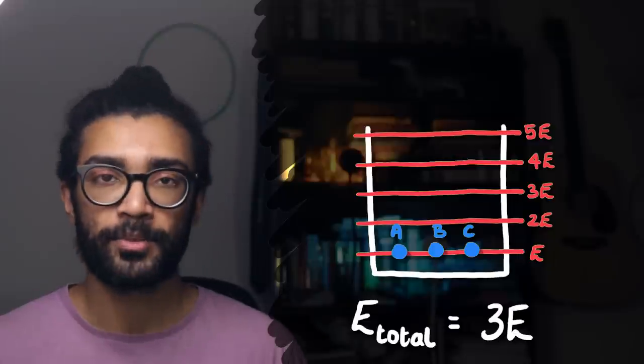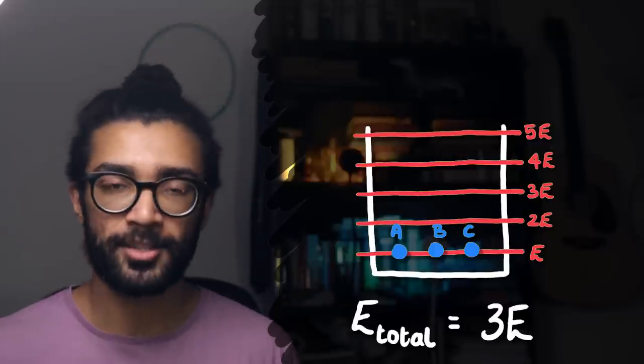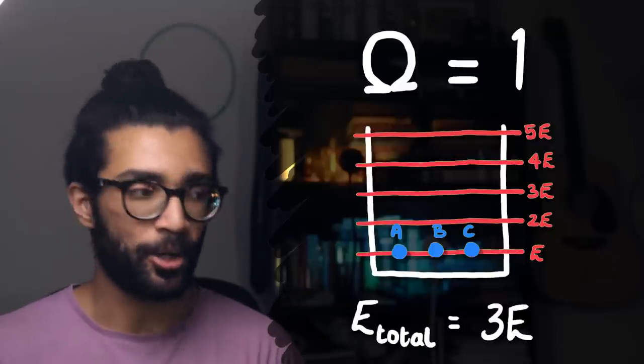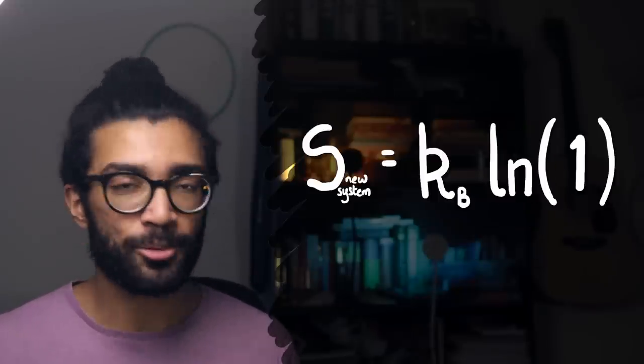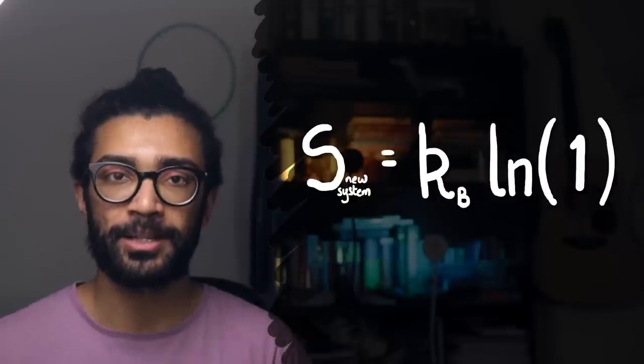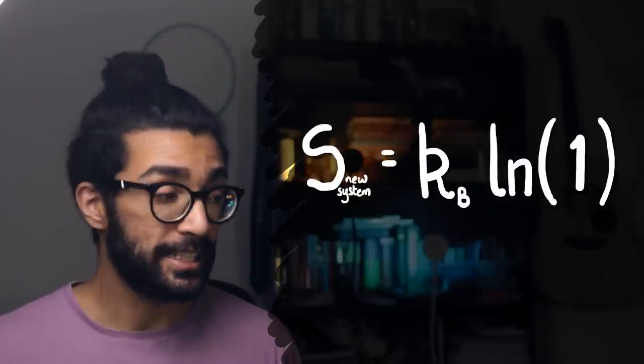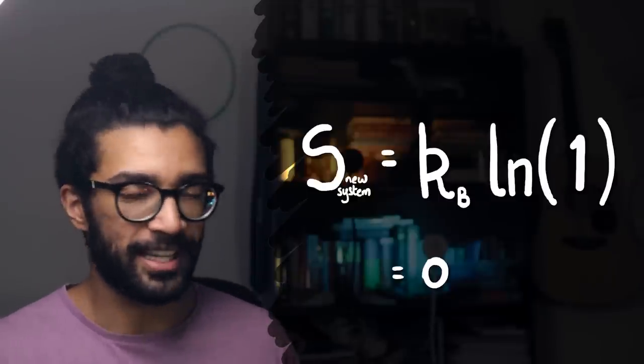So for this system, total energy 3E with three particles, the total number of microstates possible is 1. Therefore, omega is equal to 1, and its entropy is just K_B multiplied by the natural log of 1. Incidentally, that happens to be 0, but that's another kettle of fish entirely.